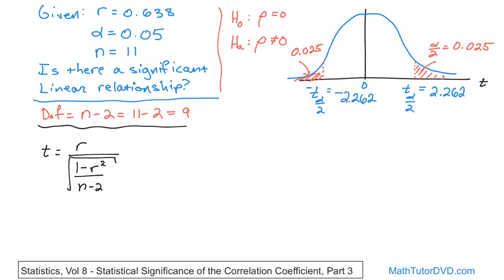So the test statistic t is r divided by the square root of 1 minus r squared over n minus 2. Now, what is the correlation coefficient? It was actually given to us in the problem statement, positive 0.638. You would get that number from Excel or a calculator with your raw data, but here it's just given to us. 0.638 on the numerator. In the bottom, you'll have 1 minus 0.638. You'll square that. Then you'll divide by n minus 2. n is 11. And you already know that 11 minus 2 is going to be 9, so just go ahead and stick the 9 down here.